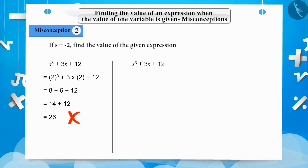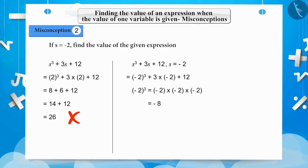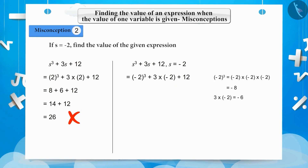Let's see the correct solution. Using s equals minus 2, we get minus 2 cubed plus 3 multiplied by minus 2 plus 12. Minus 2 cubed equals minus 8, and 3 multiplied by minus 2 equals minus 6. So we get minus 8 plus minus 6 plus 12, equals minus 14 plus 12, equals minus 2. So minus 2 is the correct answer.